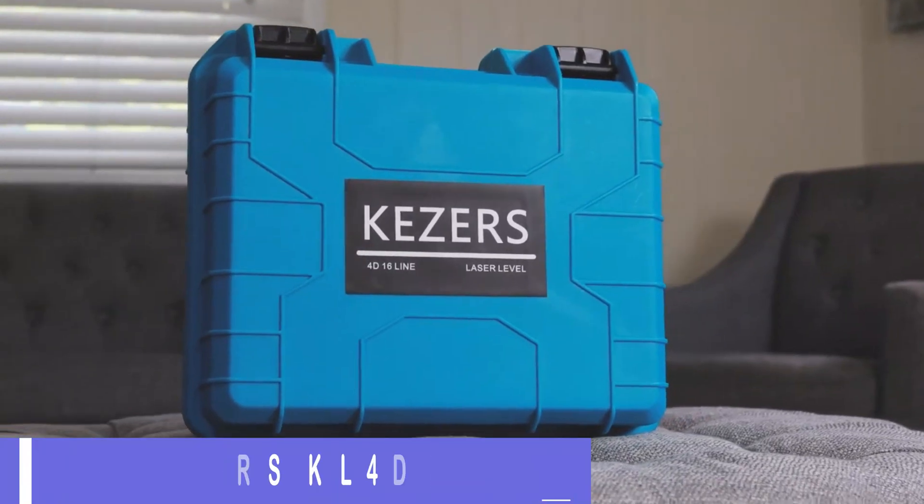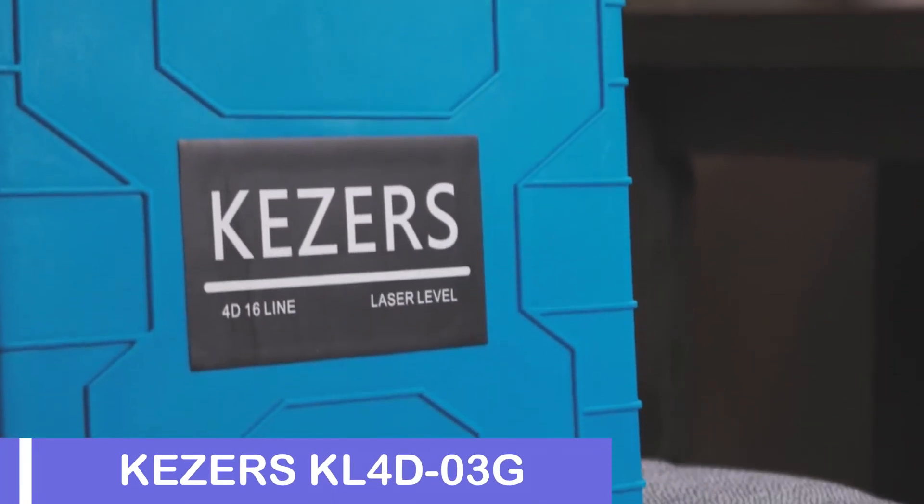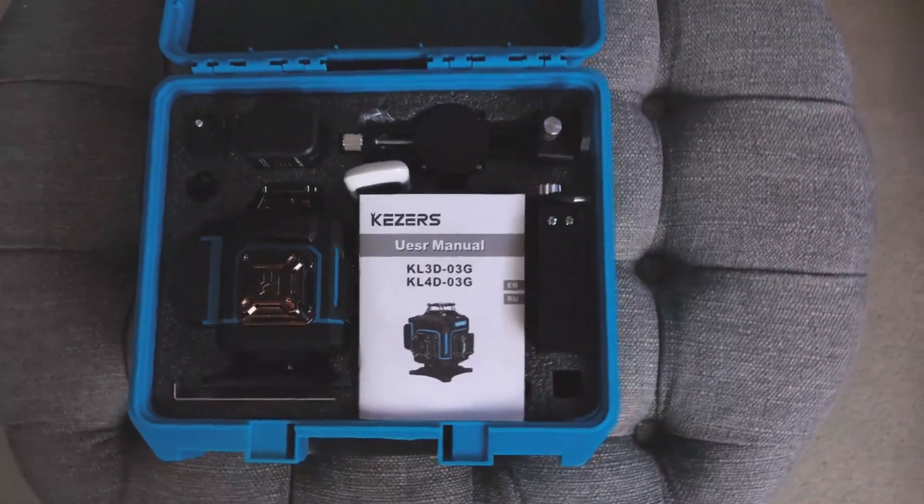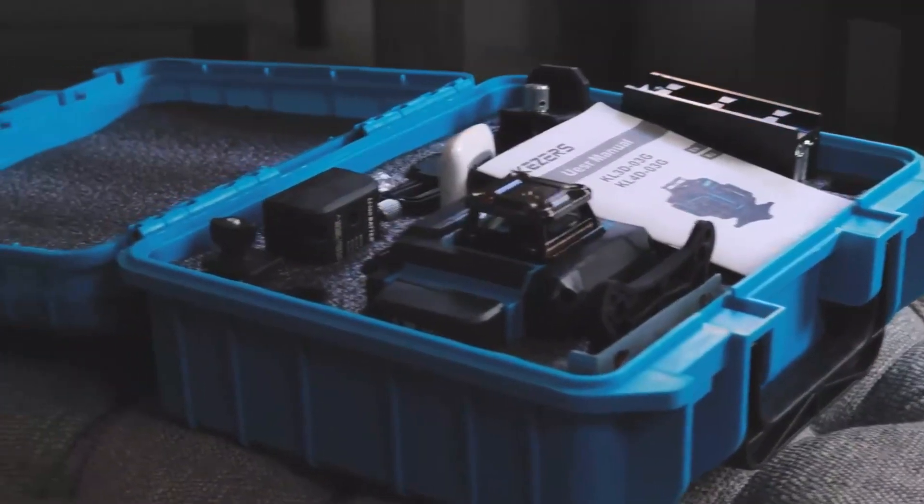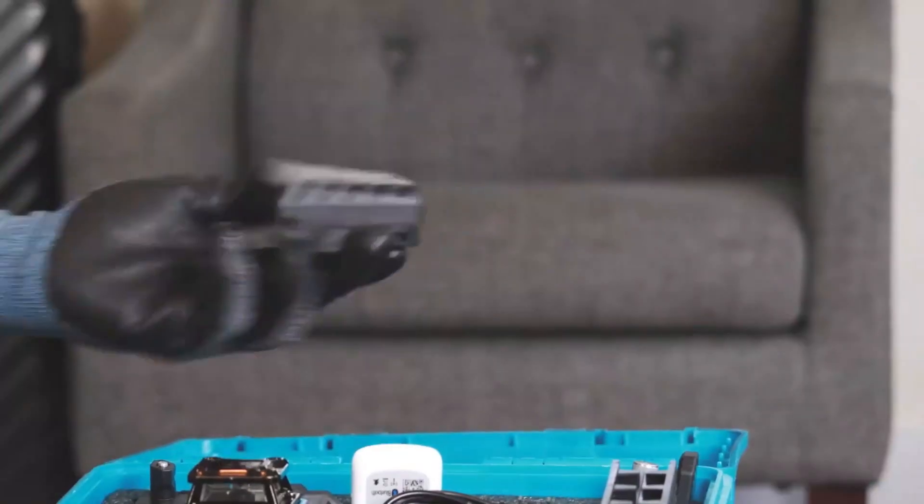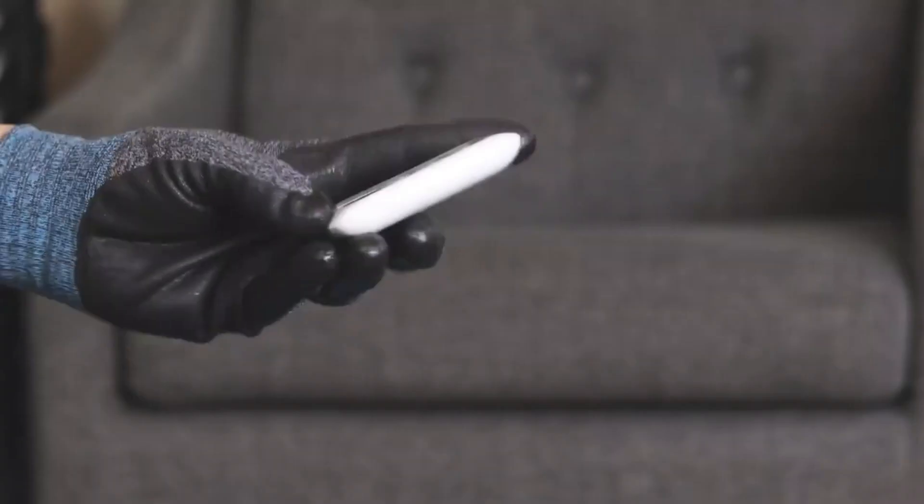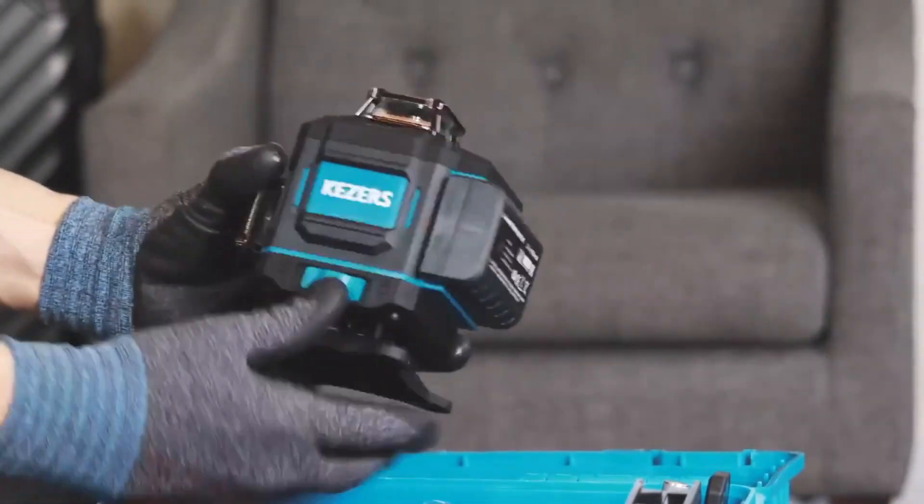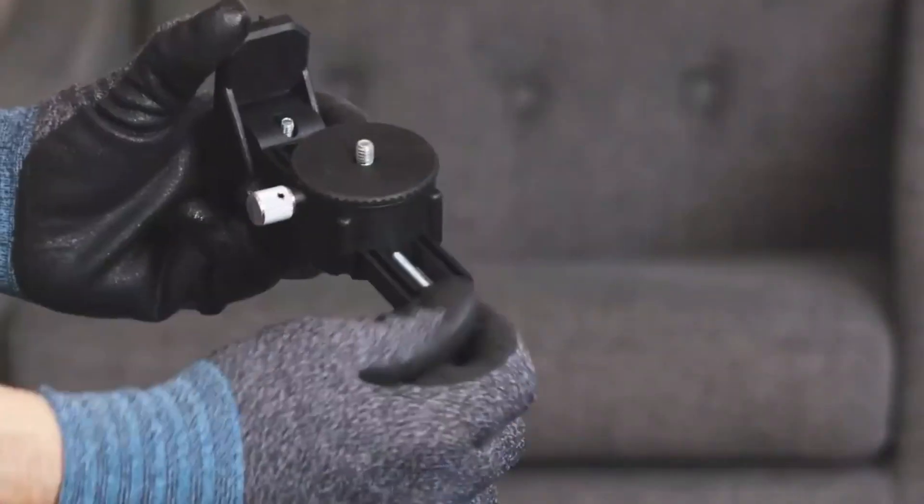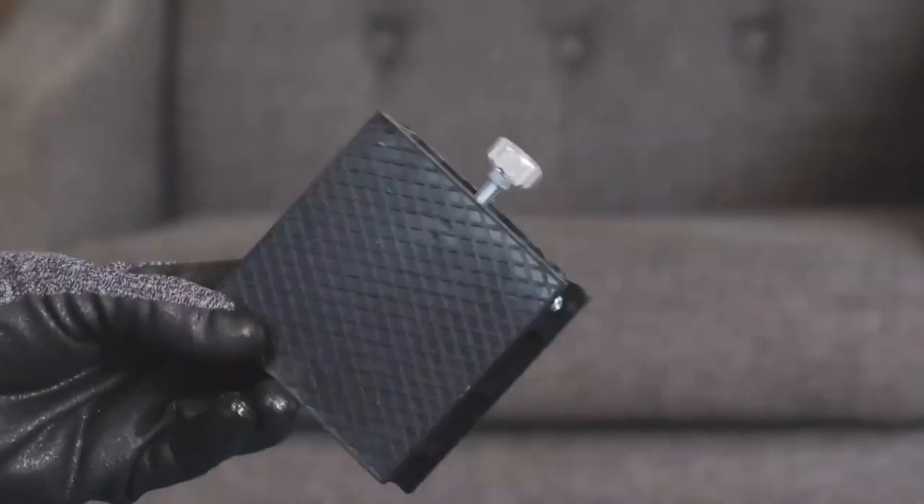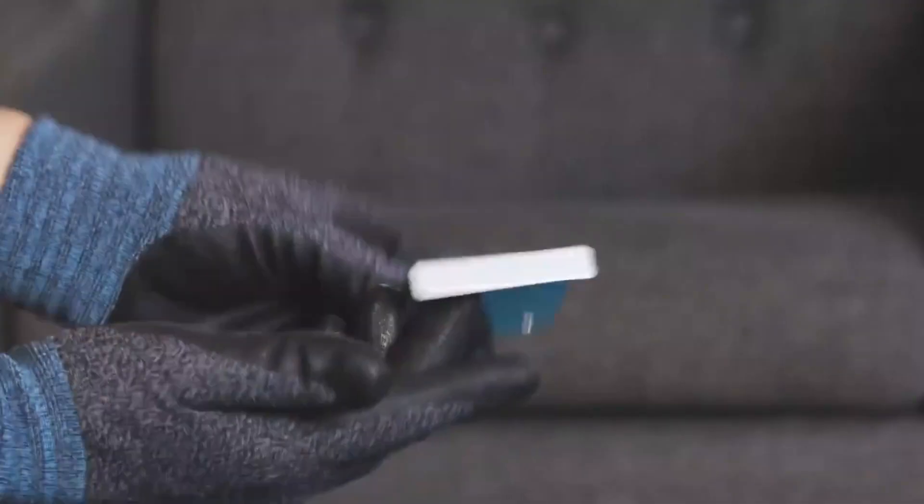Number 1, Kesers KL4D-03G Laser Level. The Kesers KL4D-03G is a precision laser level with a wavelength of 515 nm, providing sharp and visible measurements for various tasks. Its 16-line measurement model offers both vertical and horizontal laser lines, making it versatile for a wide range of tasks. The KL4D-03G is built to last, with an IP rating of IP54, making it suitable for various job sites.